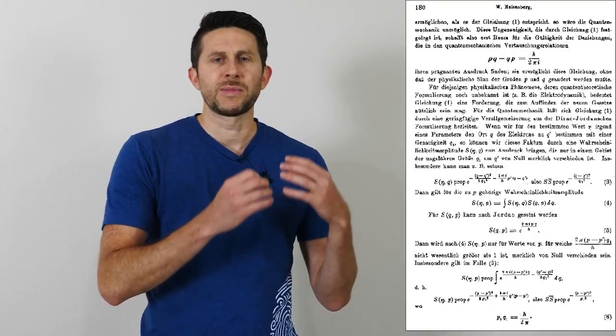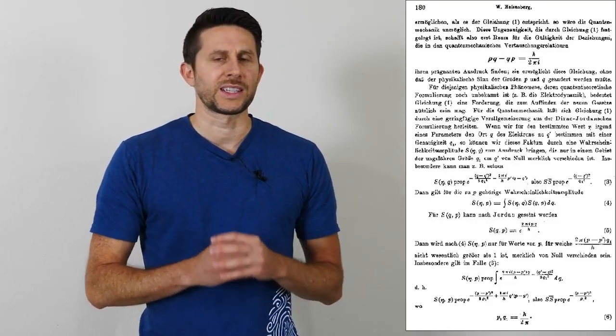Up until quantum mechanics was invented, it used to be thought that the accuracy of your experiment was only limited by the accuracy of your instruments. But then a physicist named Heisenberg came along and he showed that no matter how accurate your instruments are, you still have a limitation on how accurate you can measure things. He showed that there's fundamental limits in which you can measure two properties of an object at the same time.